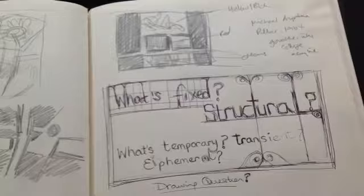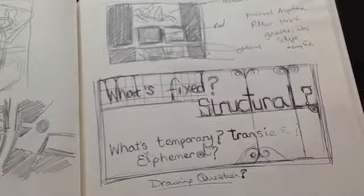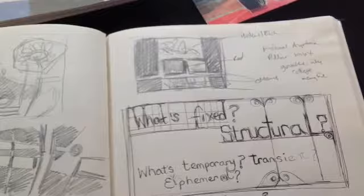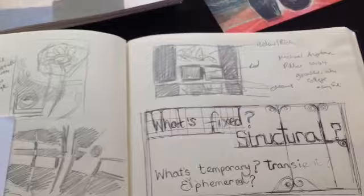What it's left with me is this question when I'm drawing about what's fixed and what's structural, what doesn't move in the landscape, and what is temporary, transient, ephemeral. For instance, drawing a garden scene: the plants for the time being are going to be fixed, but over seasons they will change.